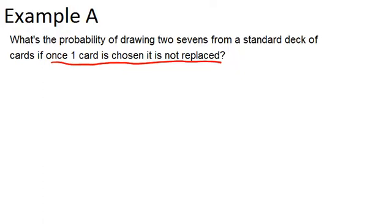So these two events are dependent on one another. So the probability of the first seven would be 4 out of 52, because there are four sevens in a deck of 52 cards total. And this reduces to 1/13.